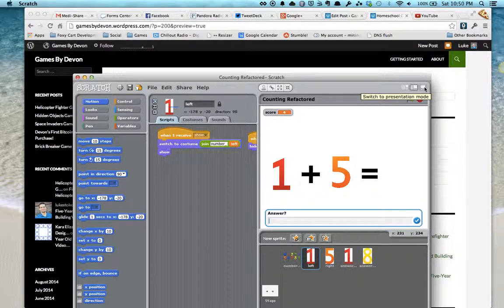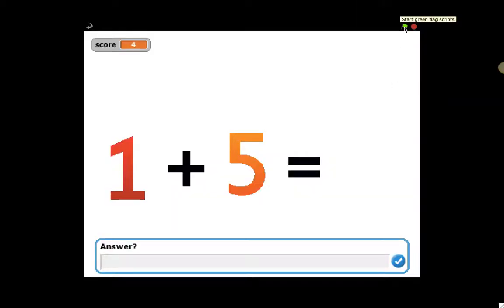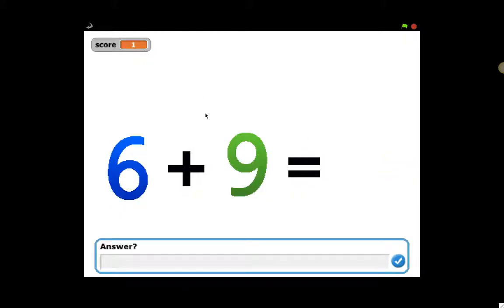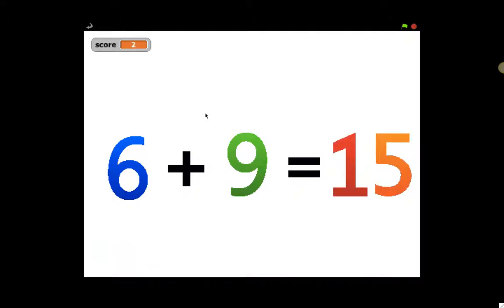This is an example of the counting game that we made. It shows you a random number between one and nine on both sides and waits for an answer. Until you put in the right answer it keeps asking. Once correct, it shows the answer for a few seconds, updates your score, and that's pretty much it.